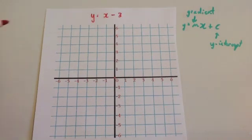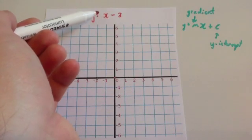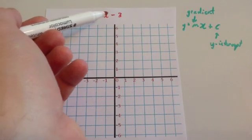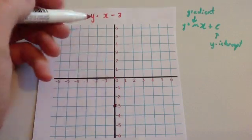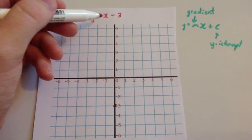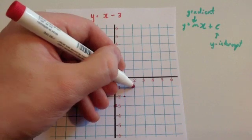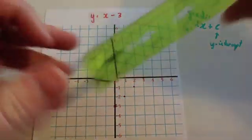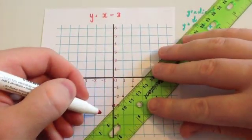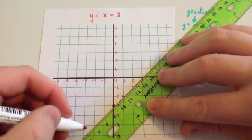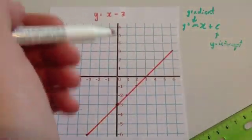Let's do another one. This time we're going to draw y equals x minus 3. The gradient in front of the x would be 1, so it's y equals 1x minus 3. The minus 3 is the y-intercept, so it crosses the y-axis at minus 3. The gradient is 1, so if you go across 1, you go up 1 — and so on. Then just get your ruler, put it through those points, and draw a nice straight line through them. So that would be the graph y equals x minus 3.